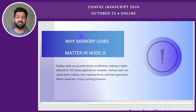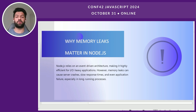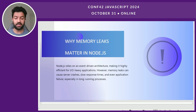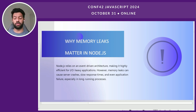Why do memory leaks matter in Node.js? Memory leaks matter in every language — whether you are using Python, C#, or any other language. But why do they matter most in Node.js? As we all know, Node.js relies on an event-driven architecture which includes event loops, callbacks, and functions that execute without blocking other functions.